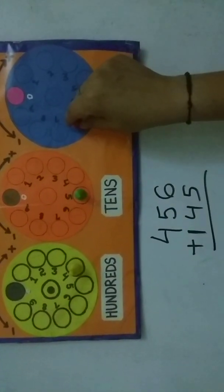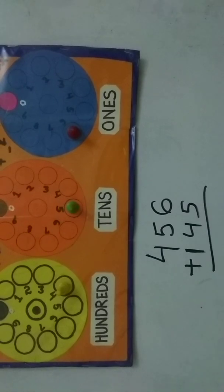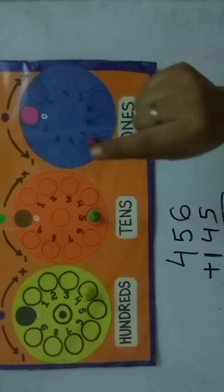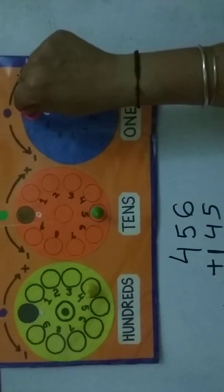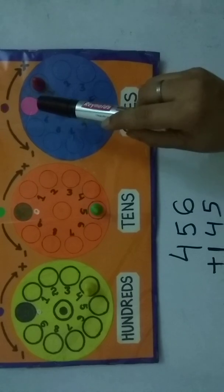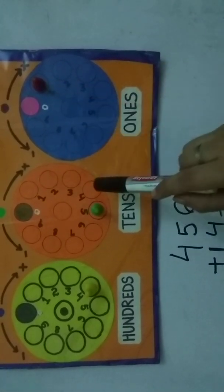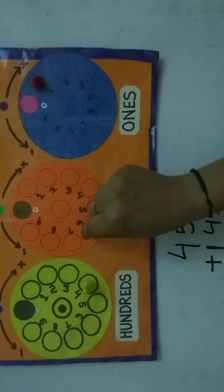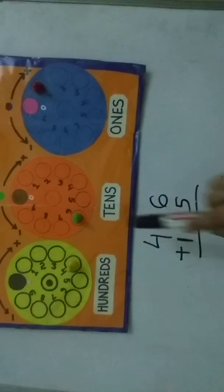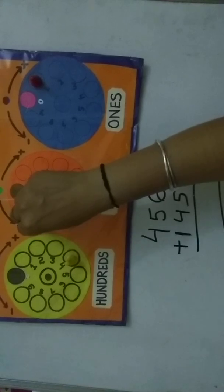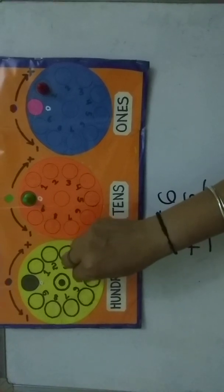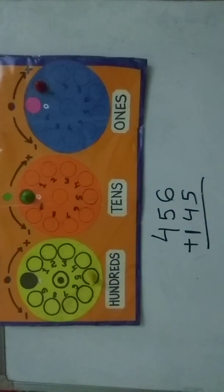Now adding 145: five is on the ones place, so move five steps ahead — one, two, three, four, five. When the marker crosses or reaches zero, you must immediately carry one to the next place holder. Now for the tens digit, four: move four steps ahead — one, two, three, four. Again it reaches zero, so carry one to the next place holder.